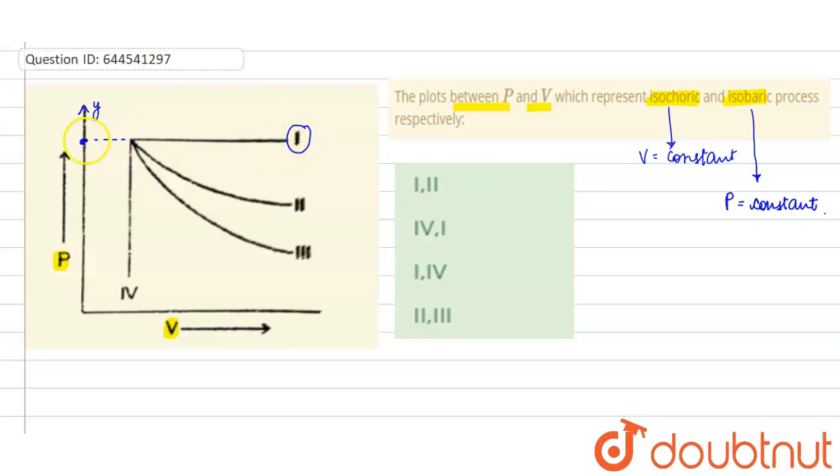constant pressure. Because here, throughout when you increase the volume, it doesn't change, it remains same. Consider it P1 - it remains this. So here pressure is P1 throughout. You increase the volume, so here it is representing isobaric process.